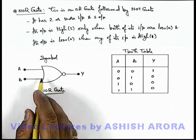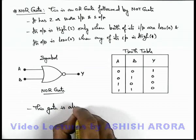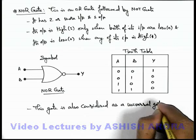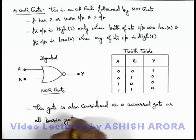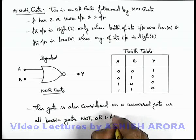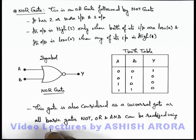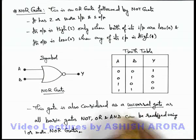One important point about the NOR gate is that this gate is also considered a universal gate. We already discussed the NAND gate, which is considered universal, as all basic gates — NOT, OR, and AND — can be realized using NOR gates, or one or more NOR gates. In coming sections we'll see how these basic gates can be realized using NOR gates, like we have studied the same for the NAND gate. There are 2 universal gates: one is the NOR gate and the other is the NAND gate.